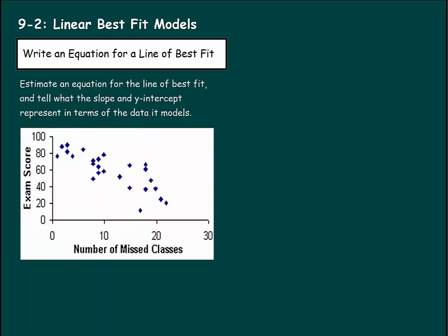Now we're going to write an equation for a line of best fit. So it says estimate an equation for the line of best fit and tell what the slope and y-intercept mean in terms of data that it models. So this is our chance to create a line of best fit. We have this data here and it looks like a negative correlation. It's number of missed classes and exam score. So the more classes you miss, the lower your exam score is going to be. If I'm going to draw this line, I could start here and it looks like I'm keeping the data above and below. This would put about the same amount above and below my line.